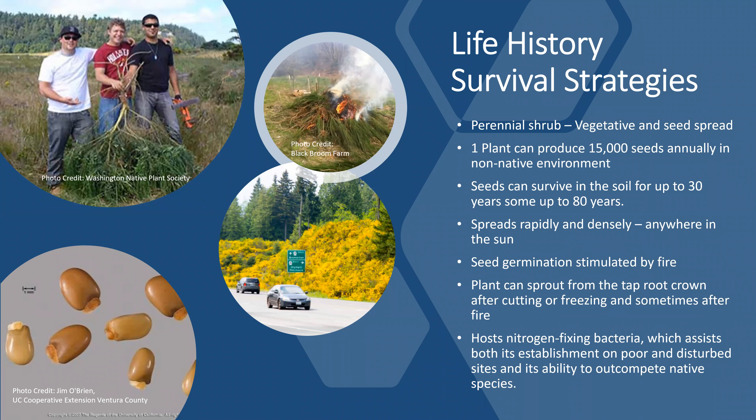The life history survival strategies of this plant: it is vegetative and can spread by seed. The plant can produce up to 15,000 seeds annually in the non-native environment — in native environments it's only about 9,000. Seeds can survive up to 30 years, and in some seed banks up to 80 years. The plant spreads rapidly and densely anywhere there is sun. Seeds are stimulated by fire and plants can sprout from the taproot crown after cutting, freezing, and sometimes fire. The plant also hosts nitrogen-fixing bacteria in the roots, which assists both its establishment on poor and disturbed sites and its ability to out-compete native species.